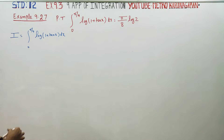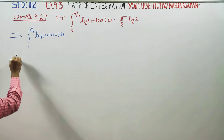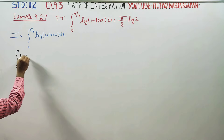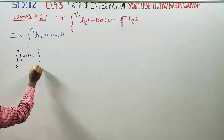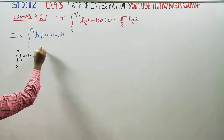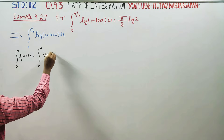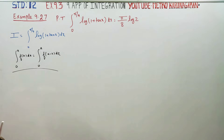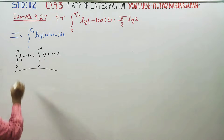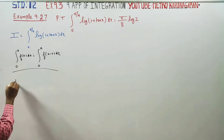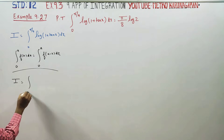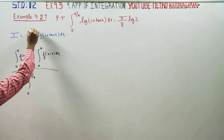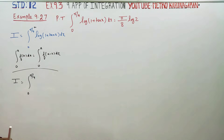If you have the property: integration of 0 to a f(x) dx equals integration of 0 to a f(a minus x) dx. Here, a is equal to pi by 4, so a minus x is pi by 4 minus x.